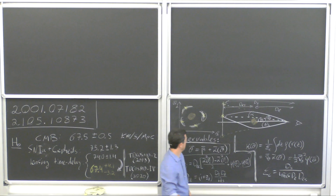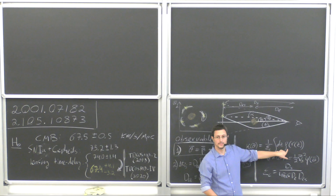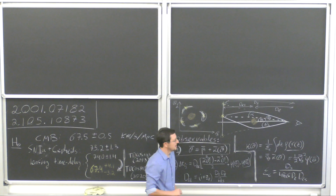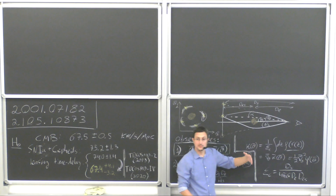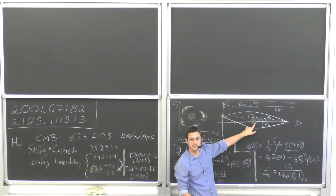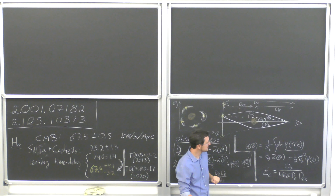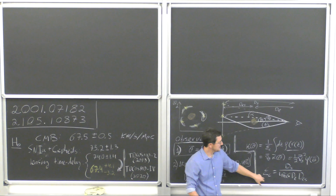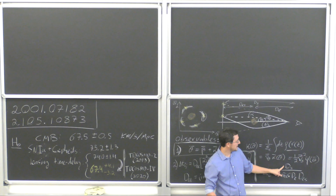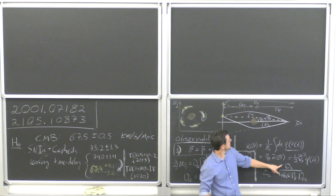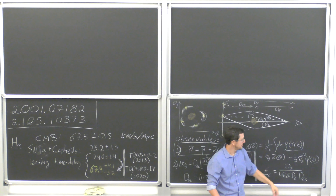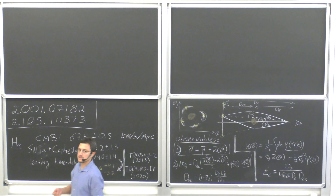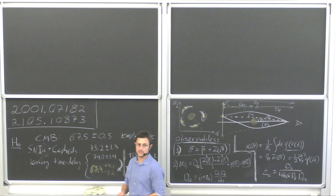Cosmology lives inside the critical density, because the integral over the density field of the lens is astrophysics — we know very little about this from first principles and have to model and measure it. The critical density is just G Newton times a product of angular diameter distances: Ds (angular diameter distance from source to observer), Dl (lens to observer), and Dls (lens to source). Angular diameter distances are proportional to 1/H0, so if you could measure any of these and know the redshifts, you'd have a measurement of H0.